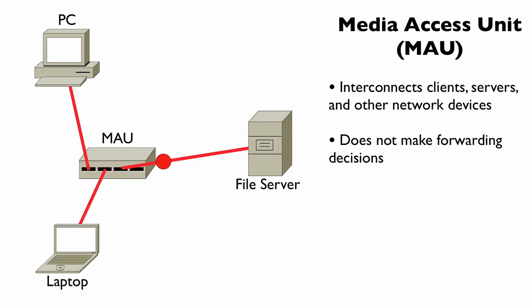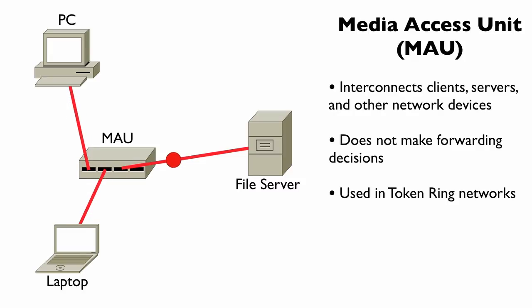Similar to a hub, a MAU does not make forwarding decisions. It simply does token passing. A token that arrives on one interface is going to be sent out of the next interface, and it's going to return, and it's going to be sent out of the next interface, and so on. Logically, even though it looks like a star topology, logically what's happening inside of the MAU is that it is a logical ring topology. There is a token that is circulating around all of the devices connected into the MAU, and as a result, this was used in early token ring networks.